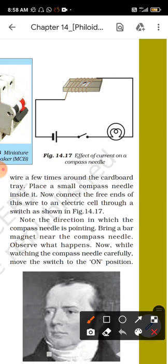First part of the experiment is that we have to bring the bar magnet towards the compass needle, and we will observe that it will show deflection. Initially, the compass needle is at north-south direction when it is at rest, and when we bring the bar magnet towards it, it will show the deflection.